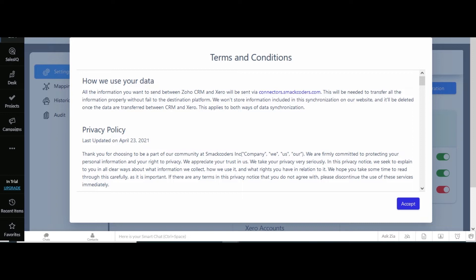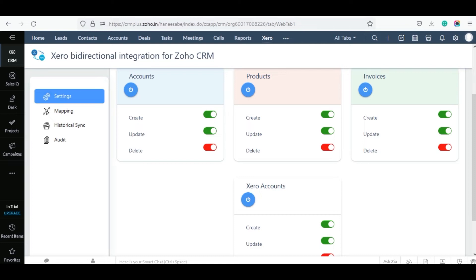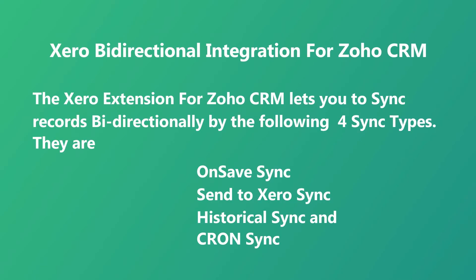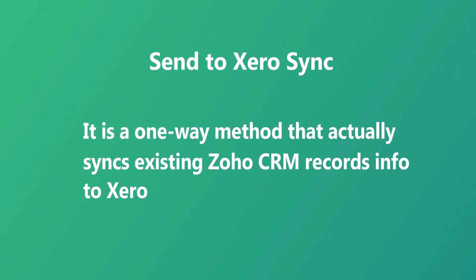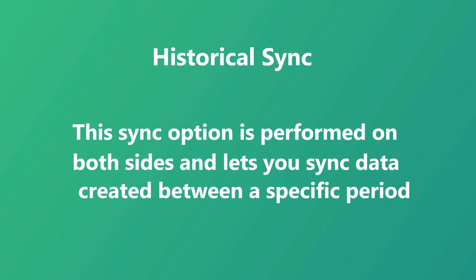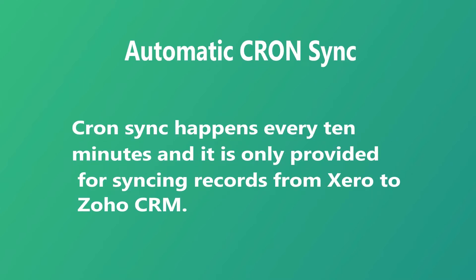The configuration is completed and now it is ready to work. The Xero extension for Zoho CRM lets you sync records bi-directionally using four sync methods: OnSave Sync, which syncs records when you click the Save button and is only performed from Zoho to Xero; Send to Xero Sync, a one-way method that syncs existing Zoho CRM records to Xero; Historical Sync, performed on both sides to sync data created between a specific period; and Cron Sync, which runs every 10 minutes and syncs records from Xero to Zoho CRM.